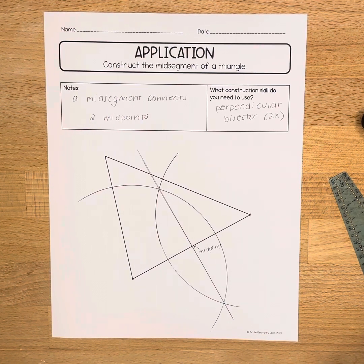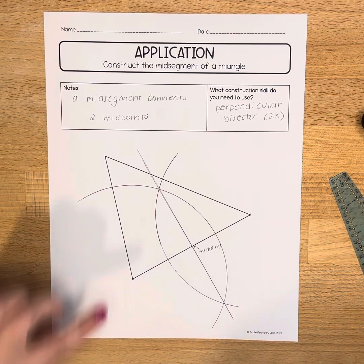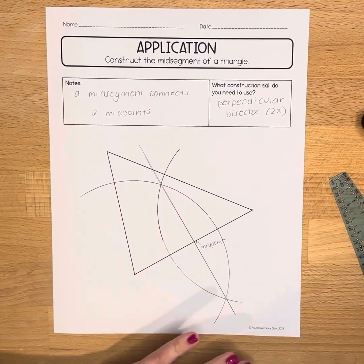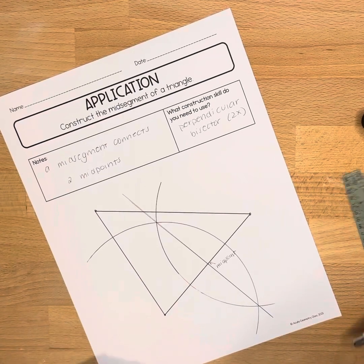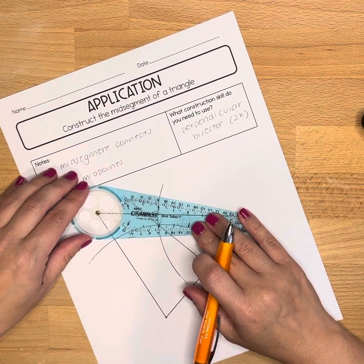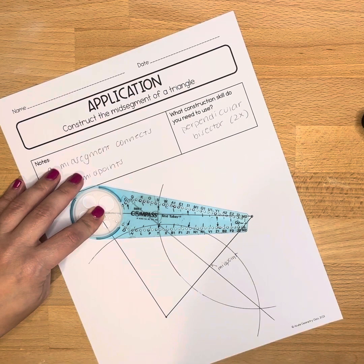Now let's see if we can find the midpoint of another side of the triangle. You have two sides left to choose from, it doesn't matter which one. I'm going to go with this top side here and I'm going to do the perpendicular bisector construction one more time using that side.